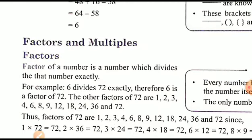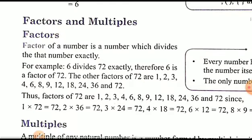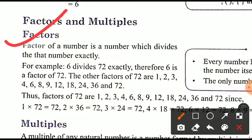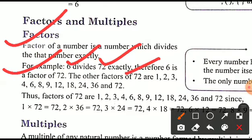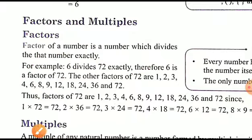Factors: a factor of a number is a number which divides that number exactly. For example, 72 is exactly divided by 6, so 6 is a factor of 72. The factors of 72 are: 1, 2, 3, 4, 6, 8, 9, 12, 18, 24, 36, and 72 — these are all the numbers that divide 72 exactly.